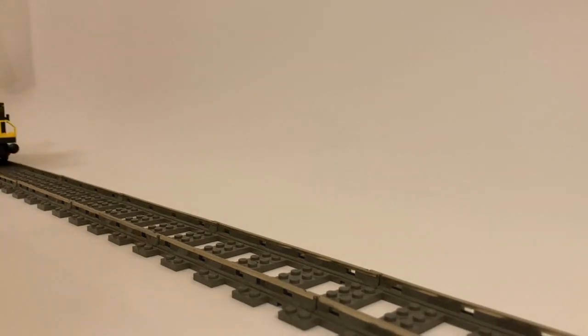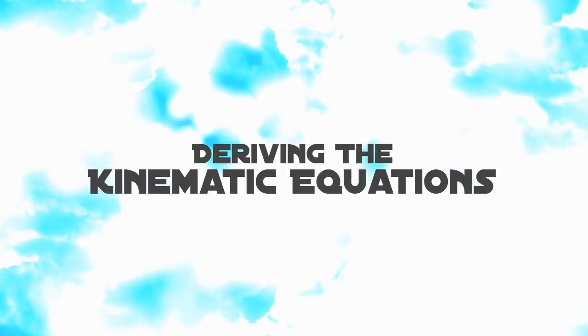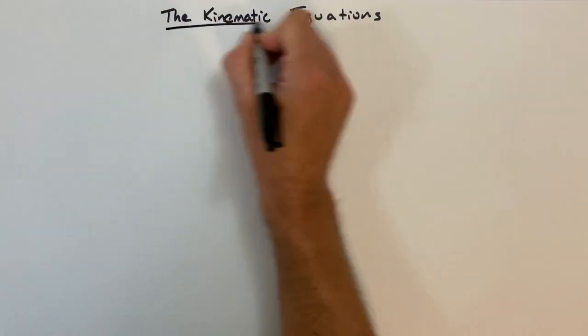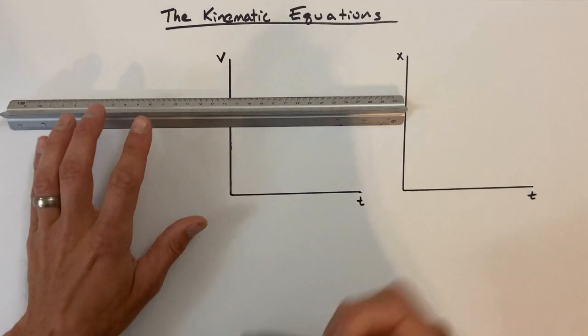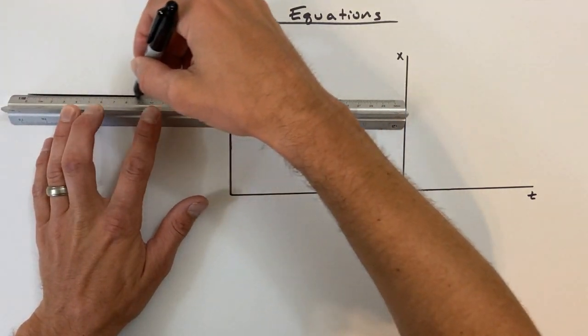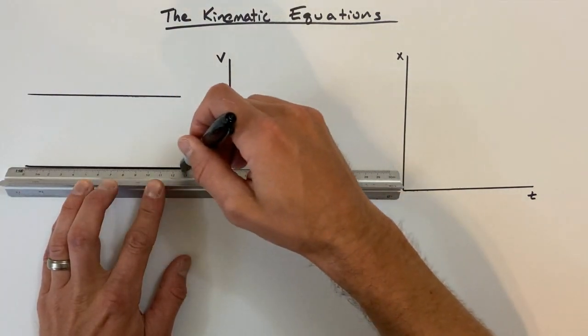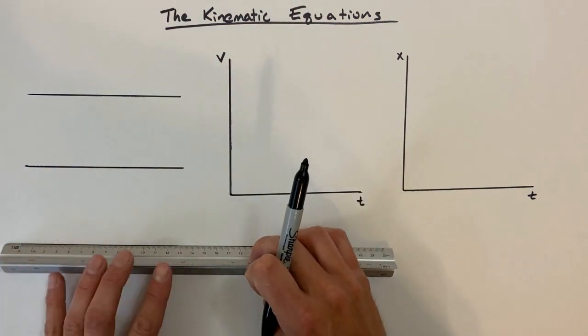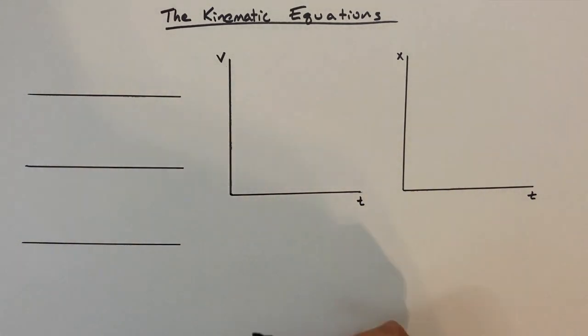Today, we're going to derive the kinematic equations. We're going to take three trains going down the tracks. Each of those trains is doing something slightly different. So we're going to graph the motion of those trains from velocity versus time and position versus time graphs. We'll be able to derive the kinematic equations.